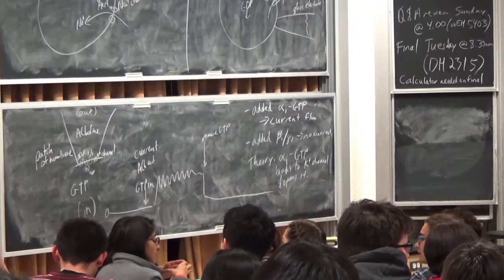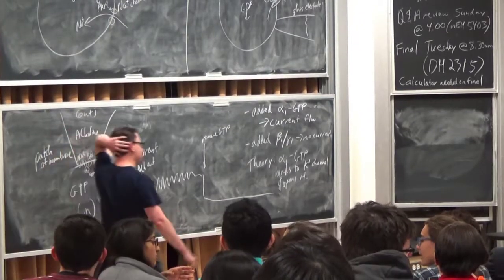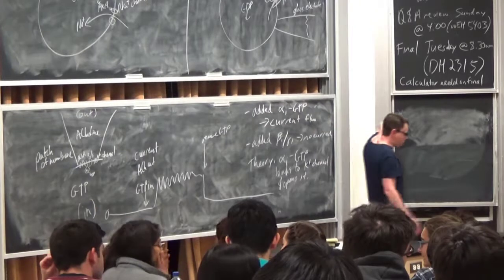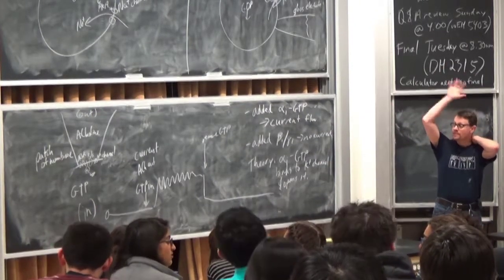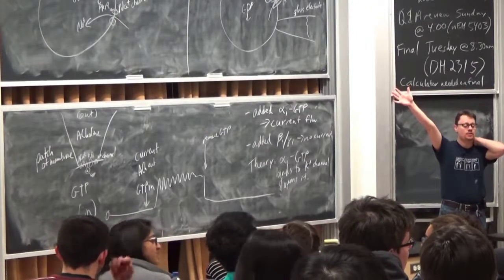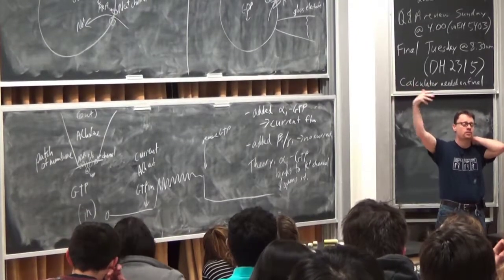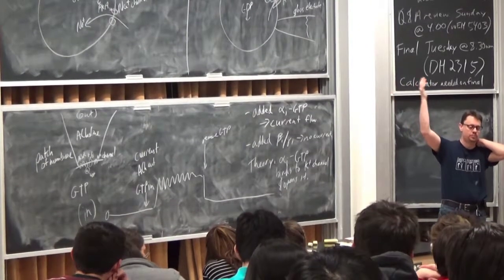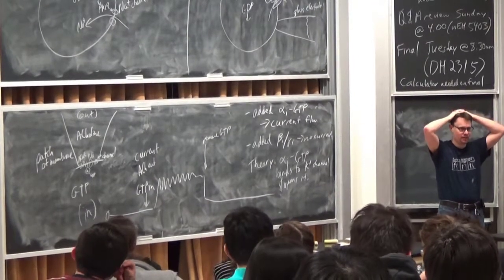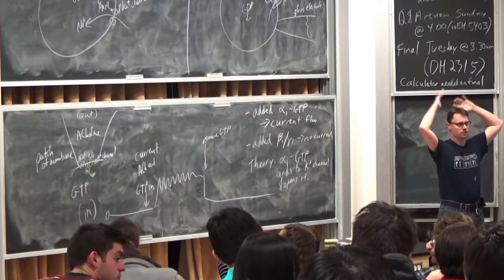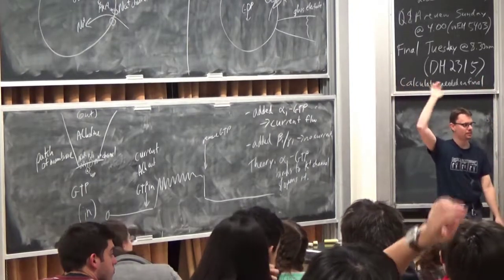Okay. Um, so we've gone, we've actually gone a little bit beyond the three minutes that I said we would take for that, but that's okay. Um, so, yeah, so first of all, what's the GDP and GTP doing? How are they sort of affecting the activity of our G protein? Um, what's the sort of job of the GDP and GTP in this? Anybody want to share what their groups came up with?